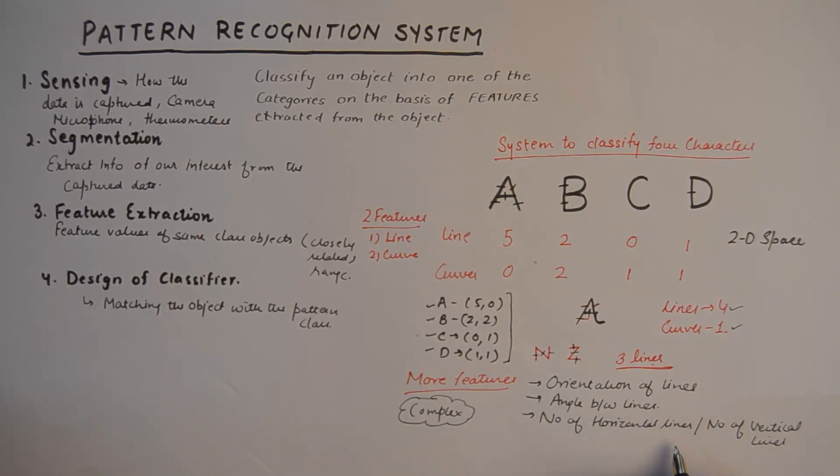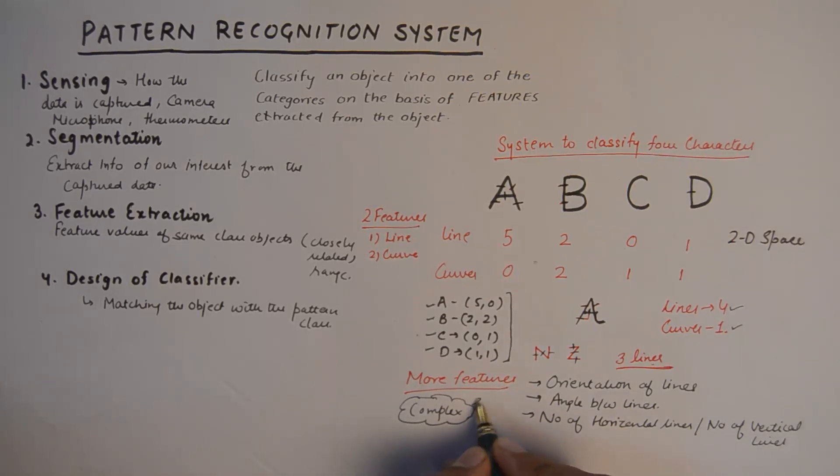If we were to take more features—for example, the orientation of lines or the angle between the lines, or if we also account the number of horizontal lines there or the number of vertical lines there—then we would be able to segregate these two alphabets also in a pattern recognition system. So addition of more features will make the system more robust, although it will make the system complex, which is the cost that we need to pay.